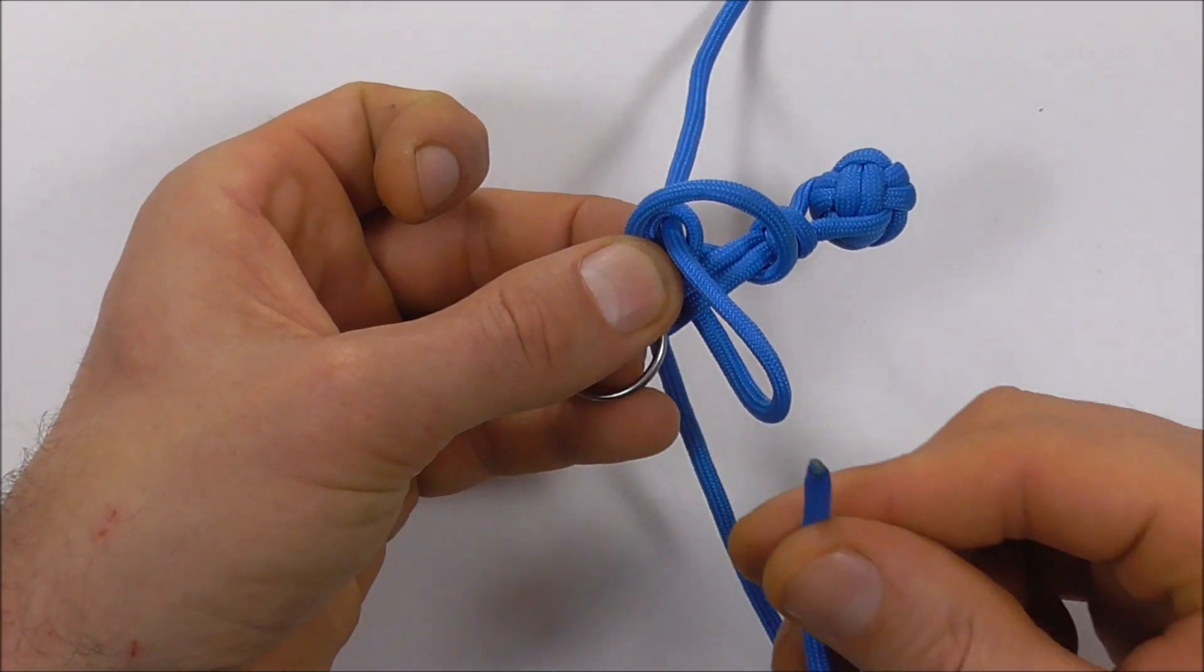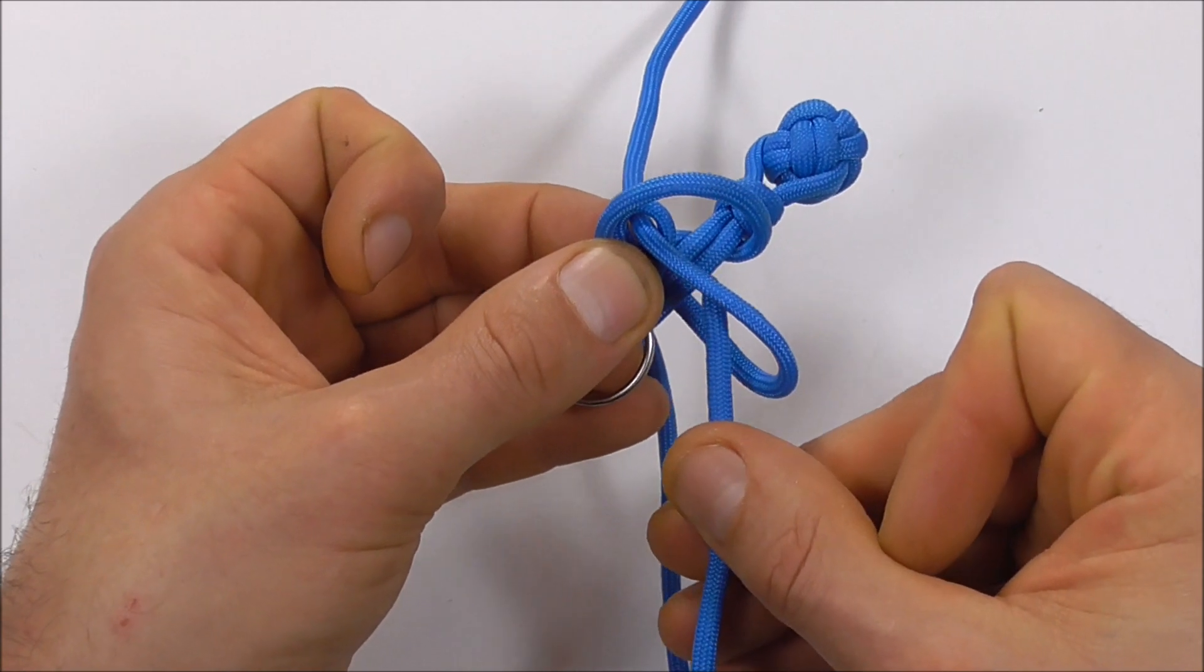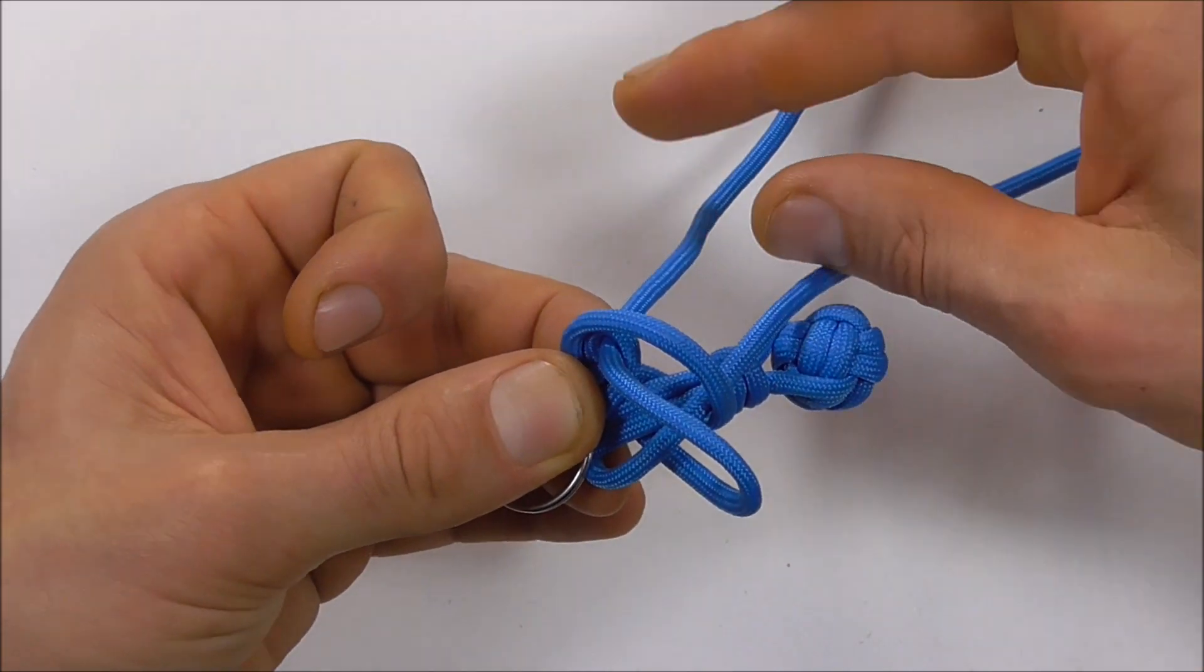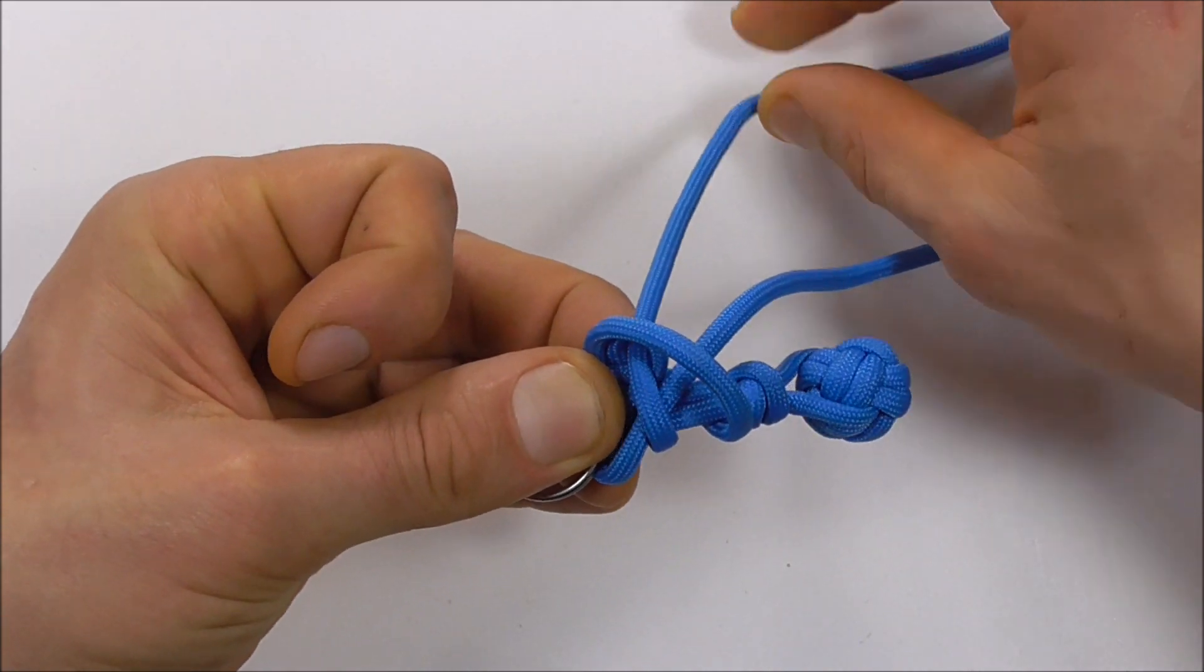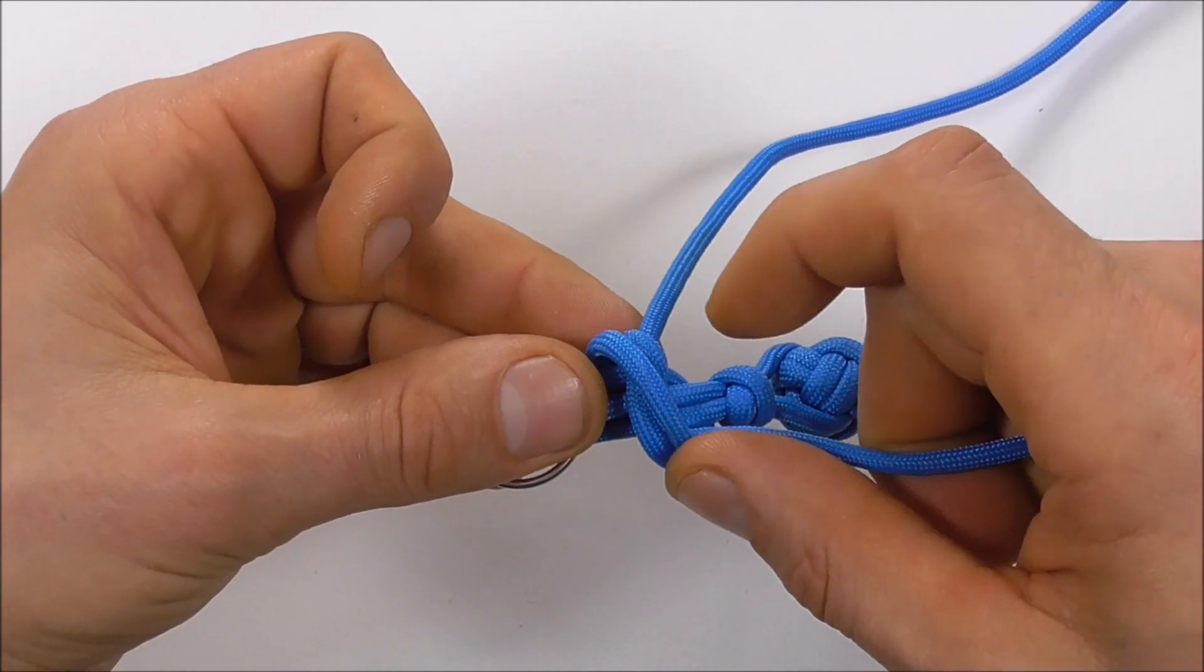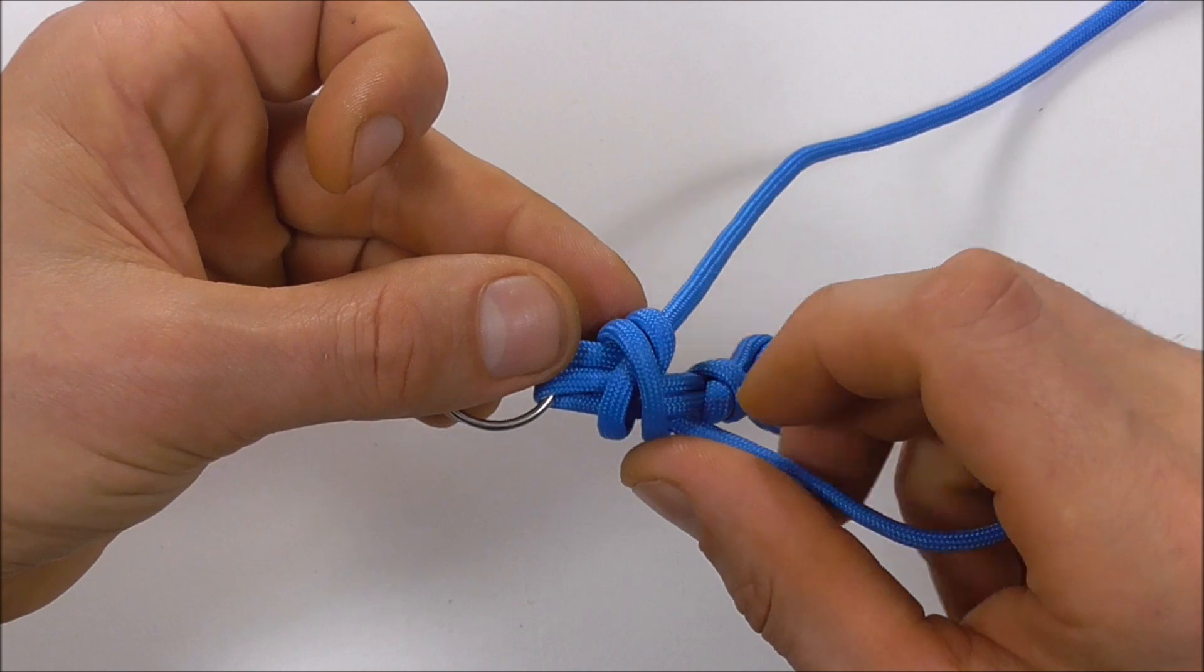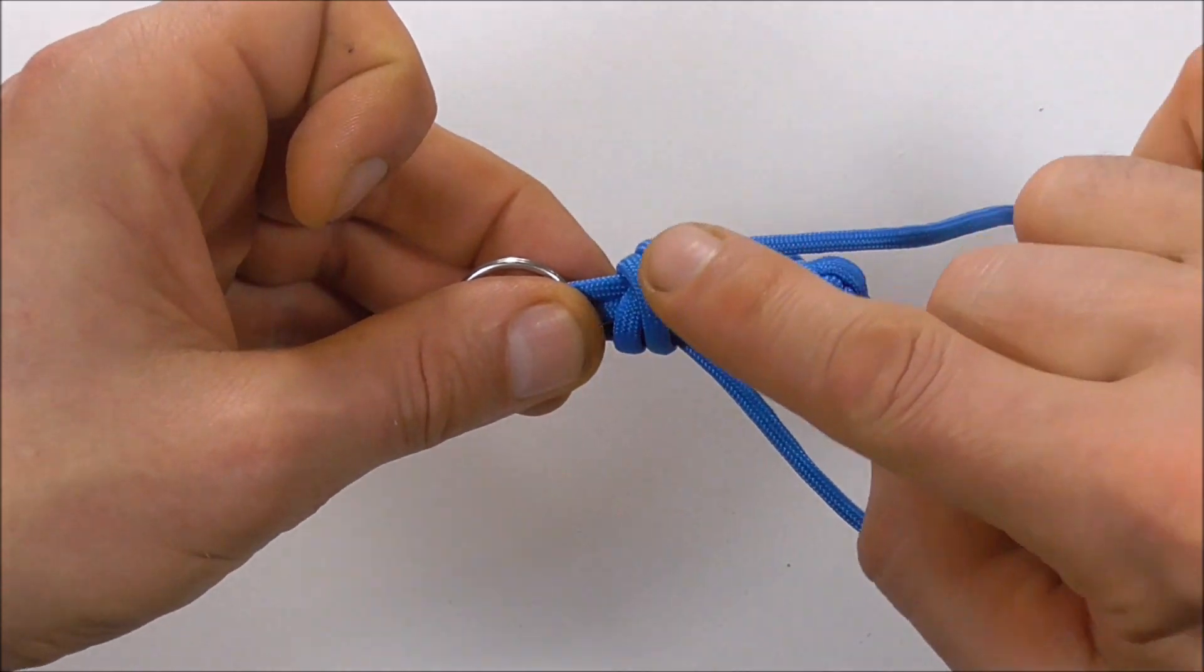Now take that working end through the first loop and then also through the second loop, and pull that through. You can switch strands here, tighten the first loop down, then switch strands again and tighten the second loop down. Make sure that as you tighten it down, you're tightening it over the first knot, forming an X shape.